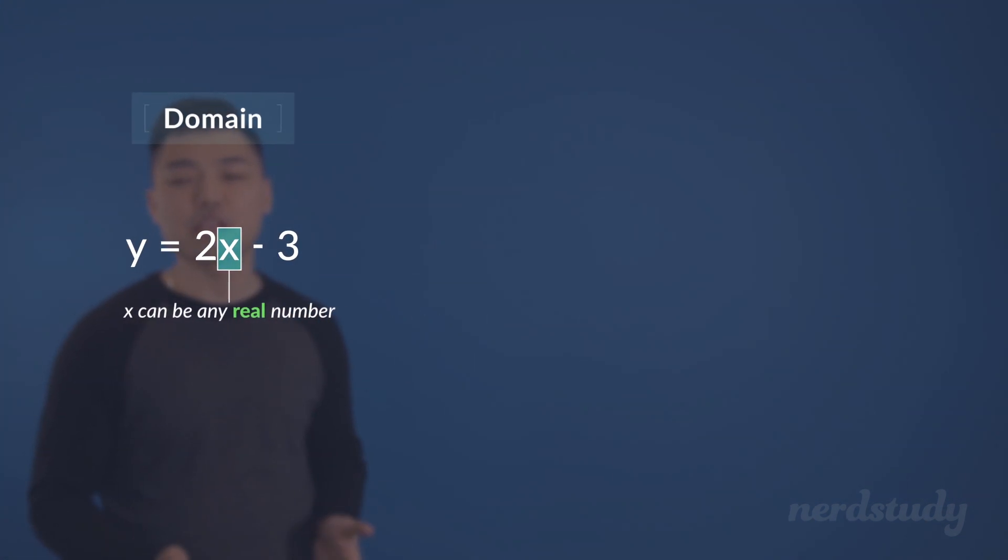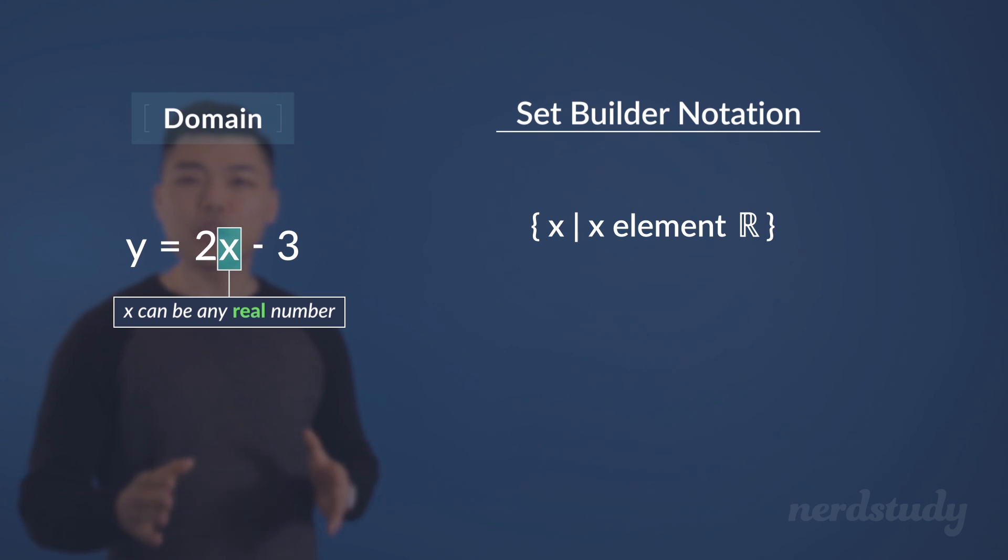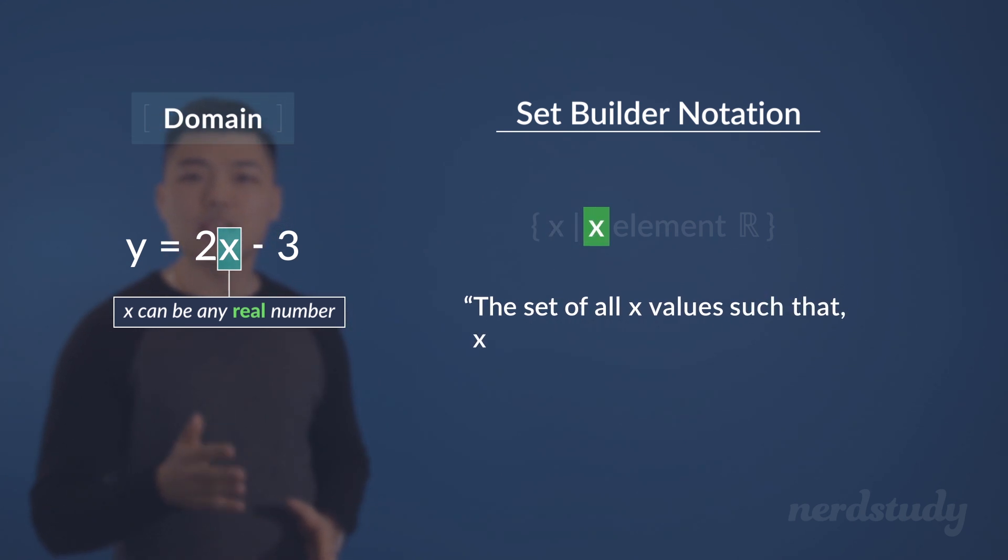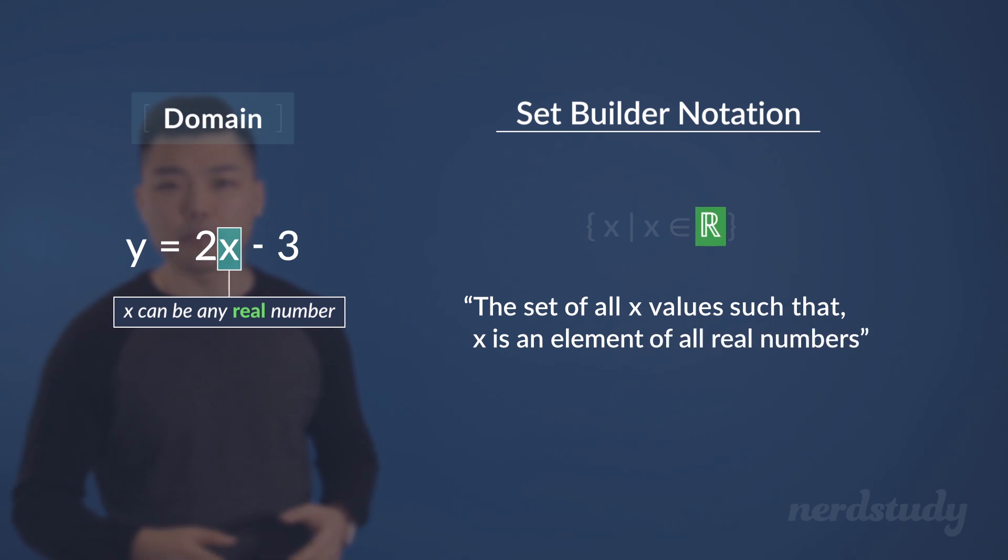Good! So, we've got ourselves a start to something called set builder notation for our domain. In an effort to say that x can be any real number, we can write this. Let's just read this to make sense of it in English. These braces basically mean the set of. So, the set of all x values such that x is an element, which we can actually shorten by representing with this symbol here,